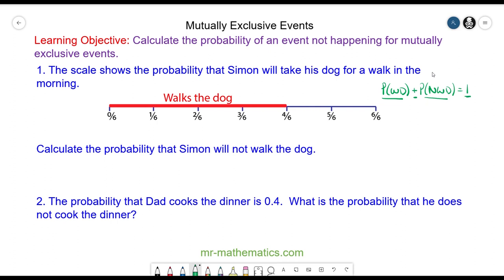We've been given in the question that the probability of him walking the dog is 4/6, and the probability of not walking we're going to work out, and that equals one. By taking away 4/6 from both sides of our equation, these will cancel and we're left with the probability of Simon not walking the dog, which is one minus 4/6.